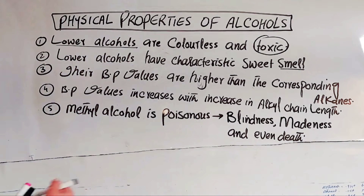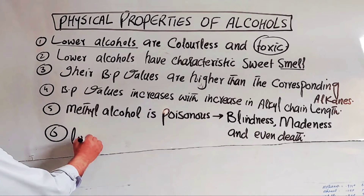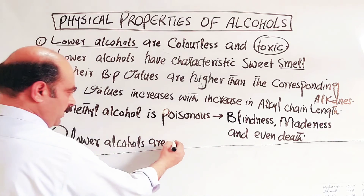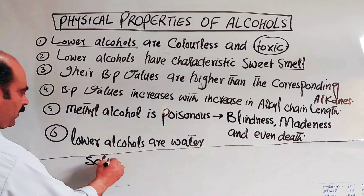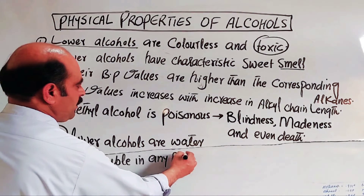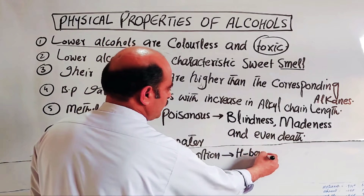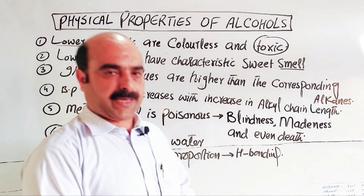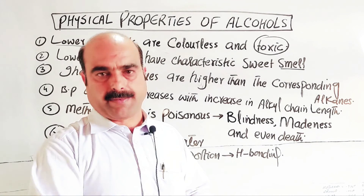Point number six, physical property number six: lower alcohols are water soluble in any proportion, due to hydrogen bonding. Lower alcohols such as methyl alcohol and ethyl alcohol can completely mix with water because they can form hydrogen bonds with water.